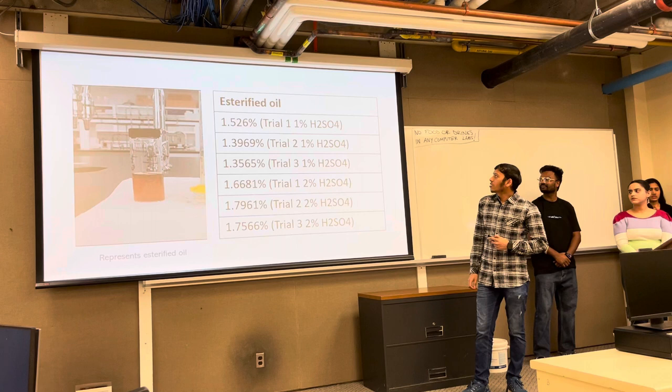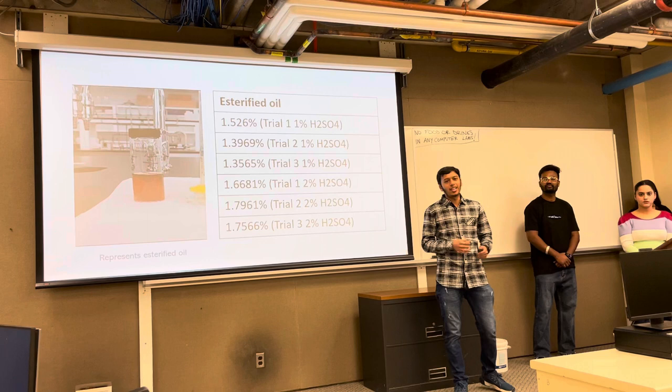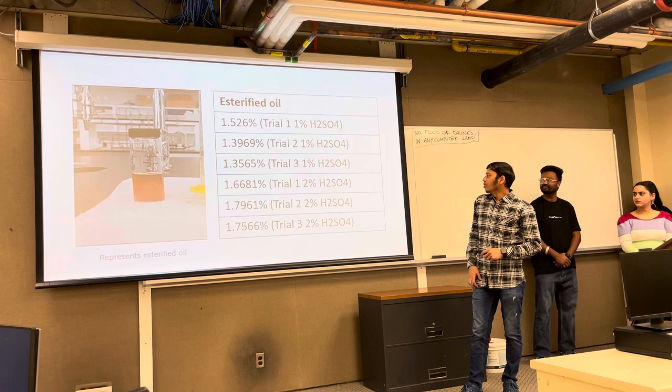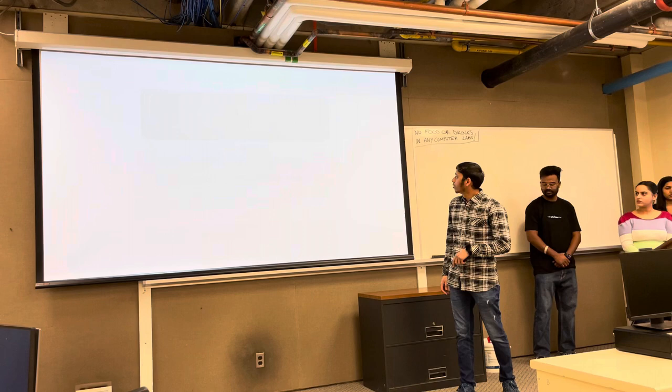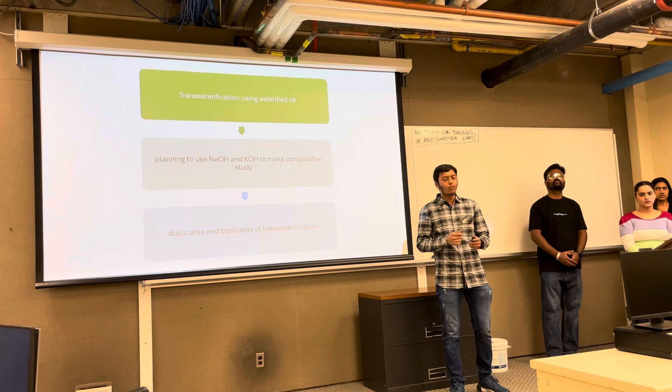When we used 1% H2SO4, we got around 1.3 to 1.4% FFA yield. Earlier it was 3.3%, so we managed to reduce fatty acid content by esterification. Even when we used 2% H2SO4 we got similar results. From esterification, we got to know that we needed to do something else to make a more efficient product.